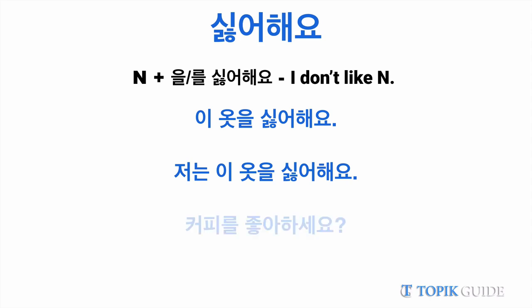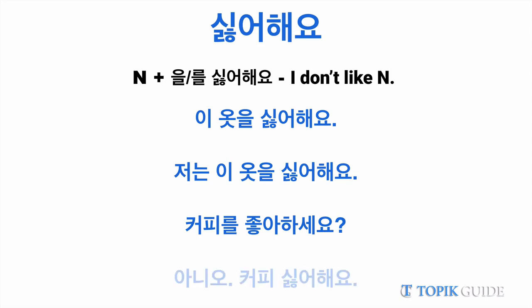Let's take another example. Someone asks you 'koppi rul choaaseyo' — do you like coffee? If you want to use shiroheyo, you can say 'anio, koppi shiroheyo.' The sentence looks almost similar to before — 'koppi shiroyo' versus 'koppi shiroheyo' — because in spoken Korean we frequently drop particles: we drop ii or ga when we use shiroyo, and il or rul when we use shiroheyo.